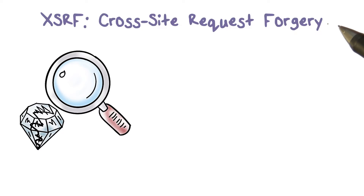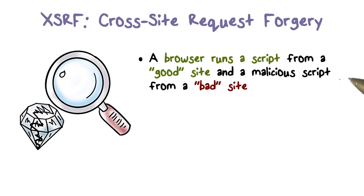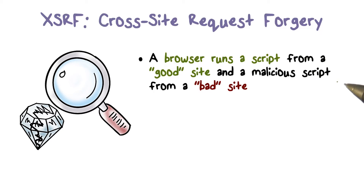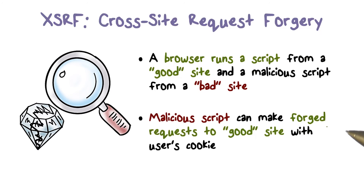Cross-Site Request Forgery is a web-based attack where a user's browser may be running a script from a good site and also a malicious script from a bad site. This can happen when the user has logged into the good site and keeps the session alive — for example, the user has logged into Gmail and has not logged off. Meanwhile, the user may be browsing other sites, including a bad site that sends malicious script to the browser. The malicious script can then forge a request to the good site using the user's cookie, and the good site does not know that the request was not sent by the user.